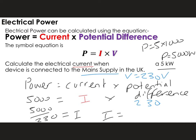So current equals 5,000 divided by 230, which gives 21.739... We round that to two significant figures, giving an answer of 22 amps. In terms of marking points: one mark for substituting your answer as 5,000 equals I times 230, one mark for the rearrangement to 5,000 over 230, one mark for the correct answer of 22, and a final mark for the units of amps — worth four marks for this question.